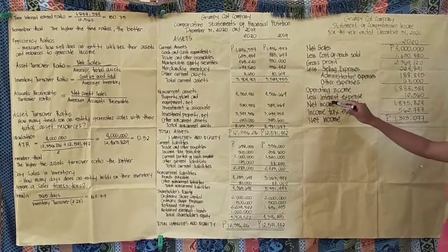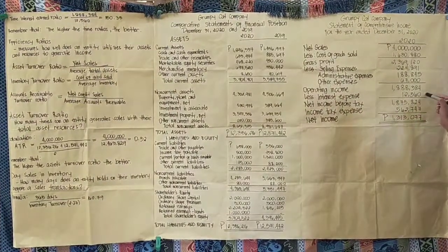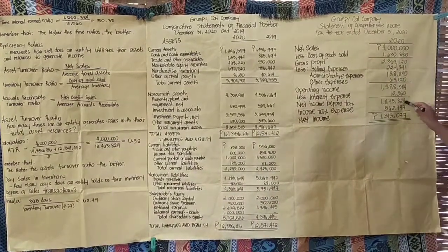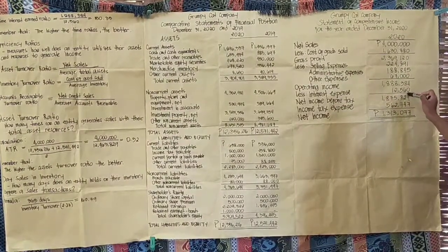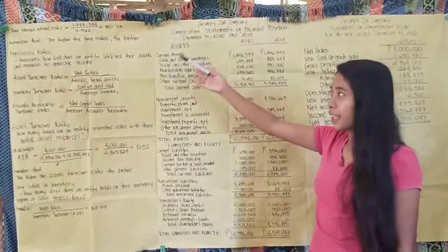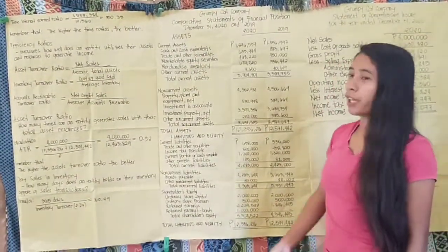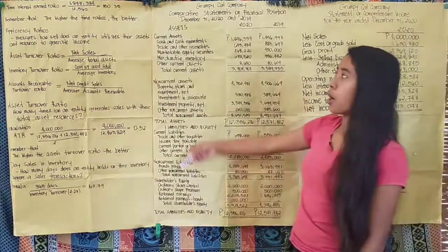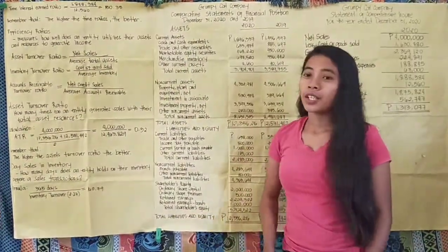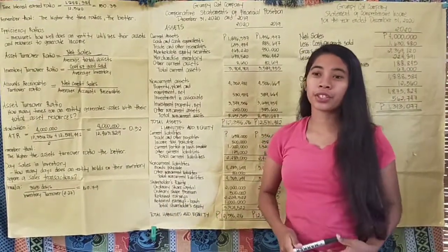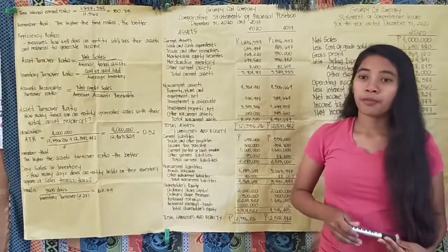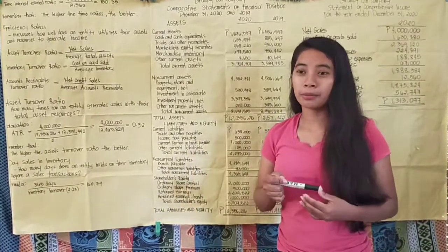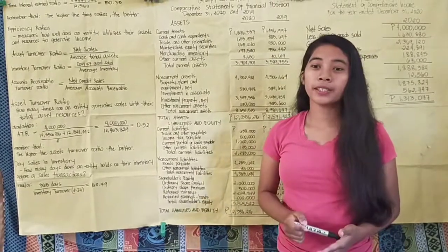To calculate earnings before interest and taxes, take net income before tax of 1,875,824 and add back interest expense of 12,560, giving 1,888,384. Divide by interest expense of 12,560, and it comes to 150.35. The company's operating income can cover interest payments 150 times, showing that the company is well able to meet its interest obligations with the income it earns.